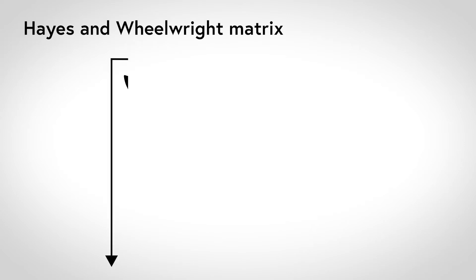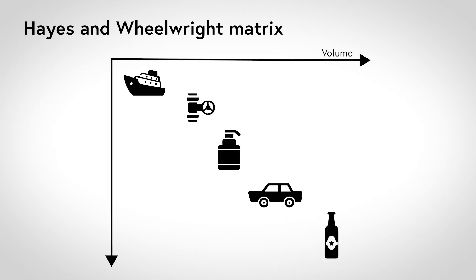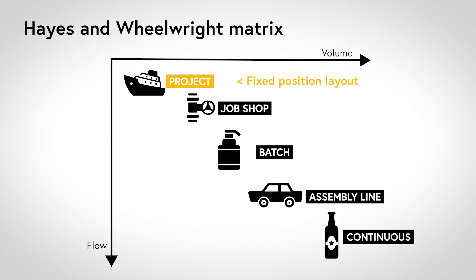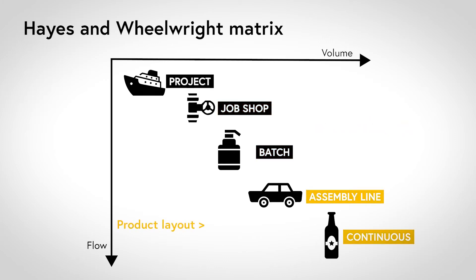Very generally, we can get an idea of the right layout by looking at Hayes and Wheelwright's famous product-process matrix. On the horizontal axis we have the volume of products and on the vertical axis we have the degree of flow. Hayes and Wheelwright separated five process types in manufacturing: project, job shop, batch, assembly line and continuous production. Generally speaking, the fixed position layout is most applicable in the upper left corner — project manufacturing. The functional layout is typically found in job shops and batch production, and the product layout is most applicable in assembly line and continuous flow designs.